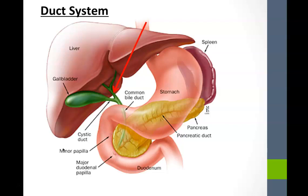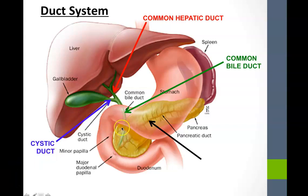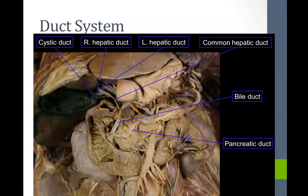To review the duct system: the common hepatic duct and the cystic duct come together to create the common bile duct. The main pancreatic duct merges with the common bile duct, leading to the major duodenal papilla. Sometimes there is an additional branch off the main pancreatic duct that delivers pancreatic juices through a minor duodenal papilla.